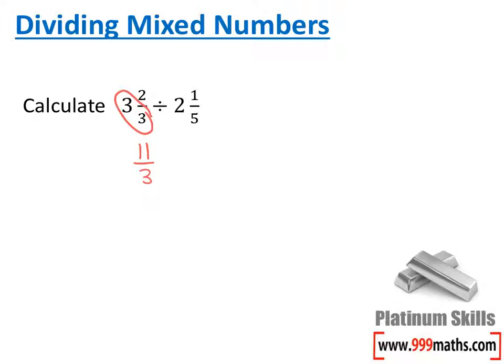We're going to do the same with the other fraction. I'm going to do 2 times 5, which gives me 10. Add it to the top, which will give me 11 over 5.